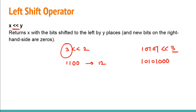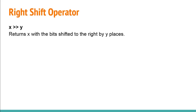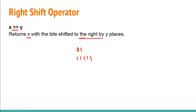Next we have the right shift operator. It returns x with the bits shifted to the right by y places — so the opposite of left shift. For example, take 31. The binary representation of 31 is 11111 (five ones).